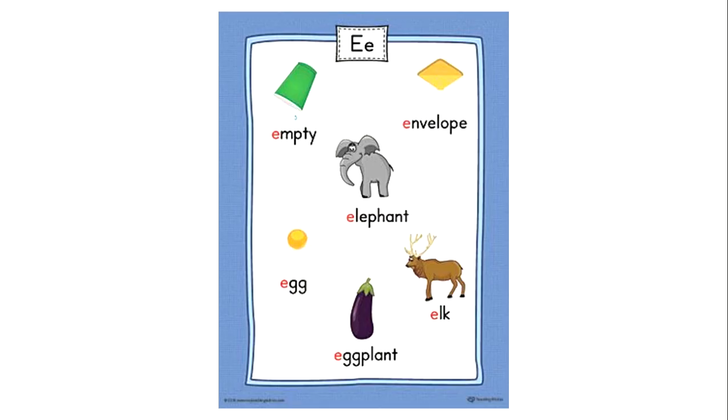This letter is E. And what sound does letter E make? It makes the sound 'eh'. So its name is E and its sound is 'eh'. Now these words have the 'eh' sound at the beginning. Pause the video and give these words a try.